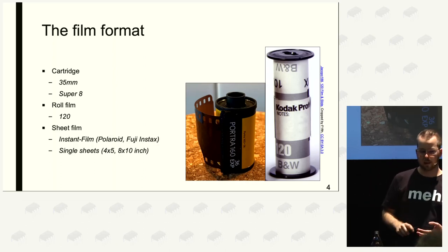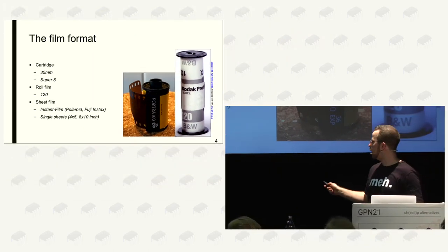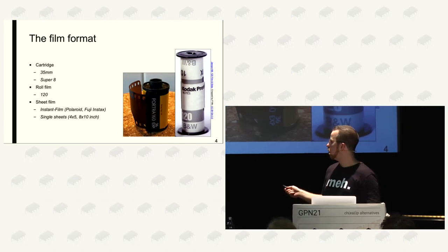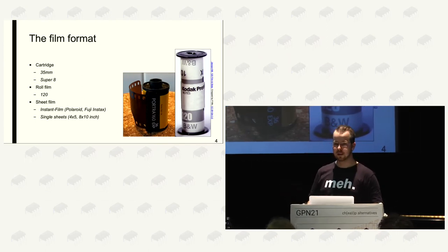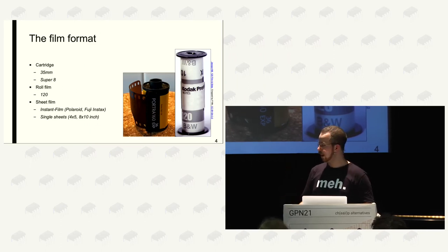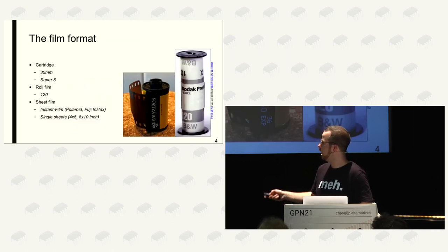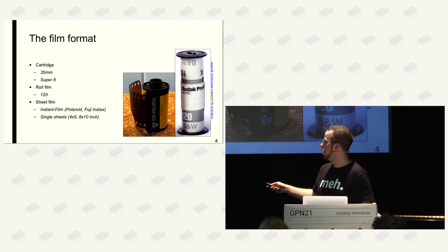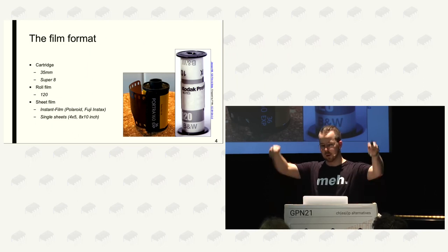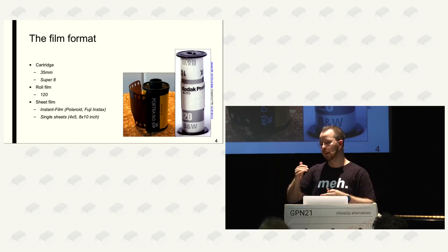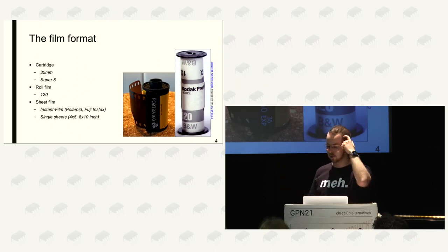The last type is sheet film. Many of you will know Polaroid or Fuji Instax — you take a photo and it drops a single piece of paper with an image on it. That's called instant film. The other example of sheet film is single sheets you have to load yourself, usually 4x5 or 8x10 inches. If you remember old western movies where the photographer goes under a cape with a huge camera — that's single sheet film.